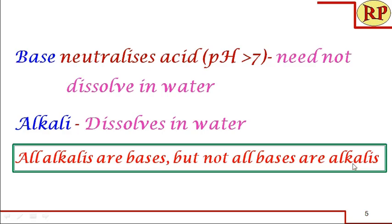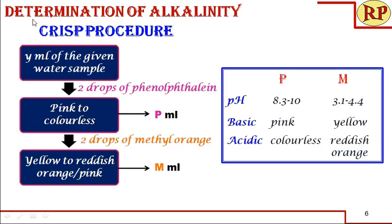Since we are discussing basic material present in water, we call it alkalinity. Because it is a base, we can determine it by acid-base titration — a very simple titration. The two common indicators used in acid-base titration are phenolphthalein and methyl orange. Phenolphthalein is pink in color under basic conditions, and methyl orange is yellow in color.